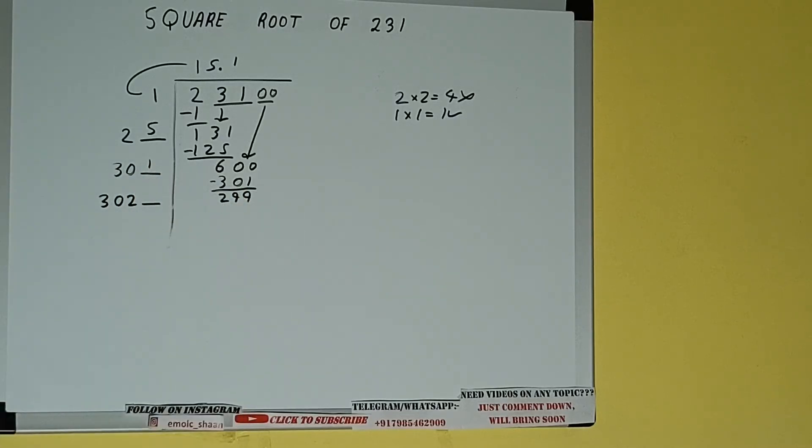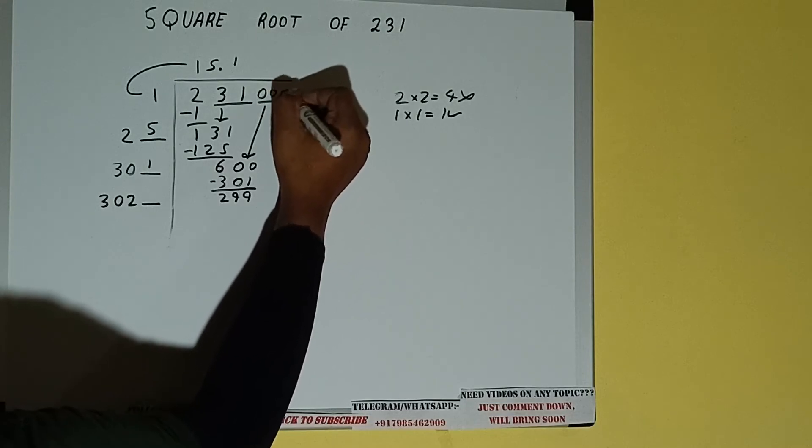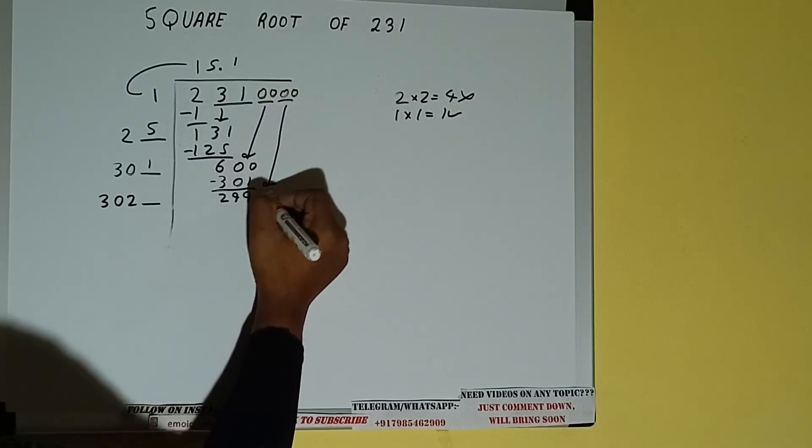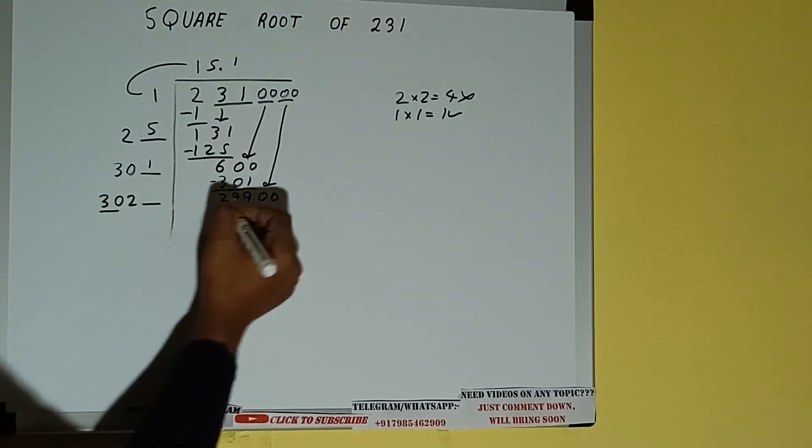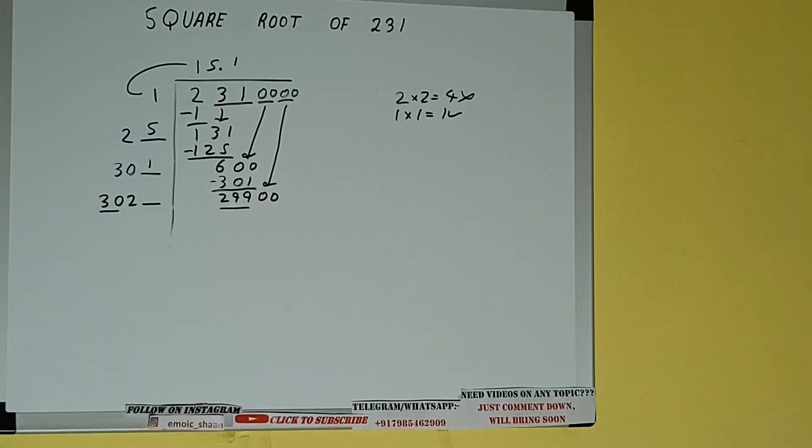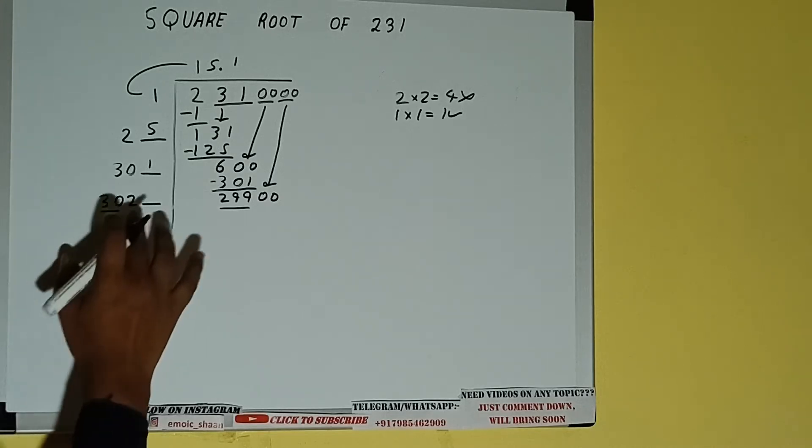And this number we need to make it big, so bring the next pair of zeros down, and the number will be 29,900. Now compare this 30 with this 299. So we can try nine times because 30 times 9 is 270, right?